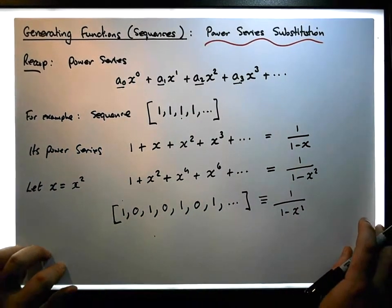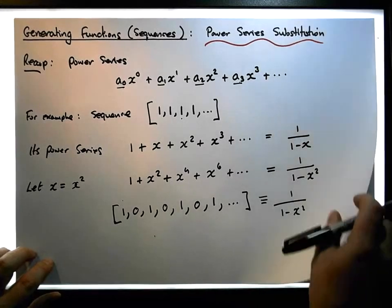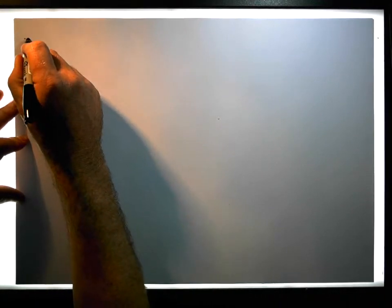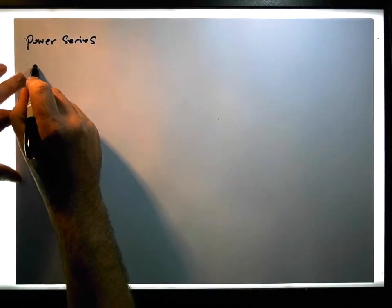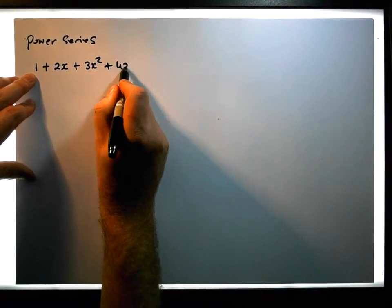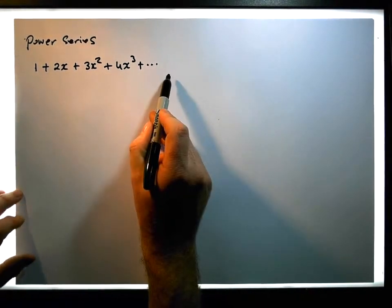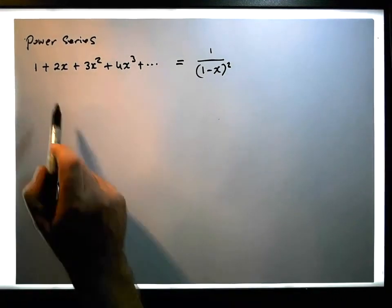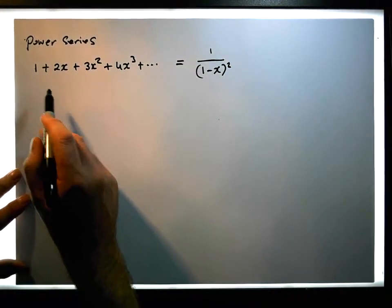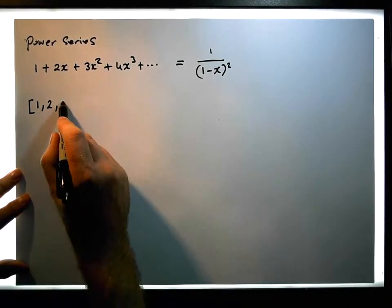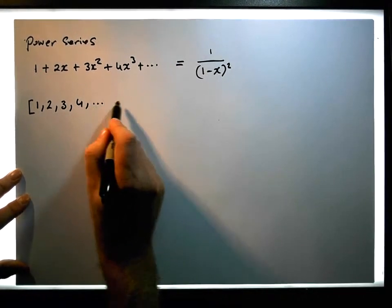Now let's play around with some power series and do some substitutions to see what happens. Let's take a power series we had earlier: 1 + 2x + 3x² + 4x³ + ... This power series had the generating function 1 over (1−x)², and it encodes the sequence of natural numbers: 1, 2, 3, 4, ...